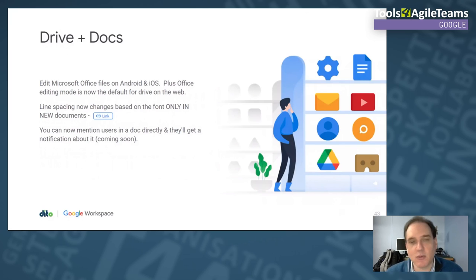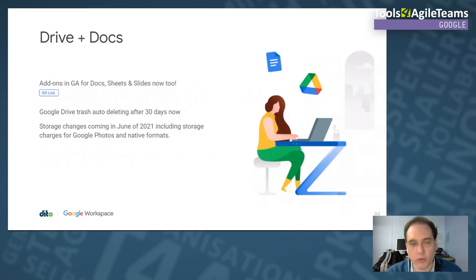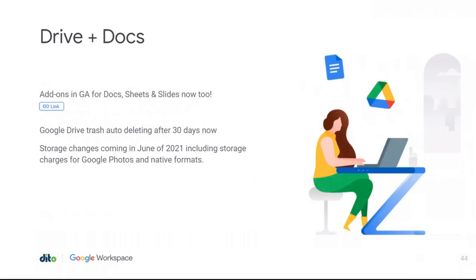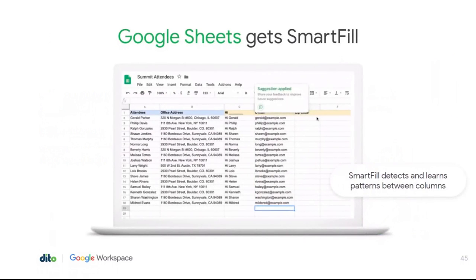You can now mention documents directly in a document and recipients get a notification — coming soon. Add-ons are now generally available in Docs, Sheets, and Slides, in addition to Gmail and Calendar. Google Contacts trash is automatically deleted after 30 days, as is Google Drive trash — users should be aware of this. Next summer, a big storage change is coming: Google Photos will no longer offer free unlimited storage in certain cases, and native formats will count against storage quotas. The quotas are still very generous though.